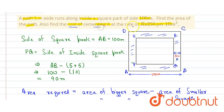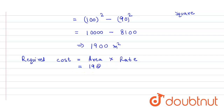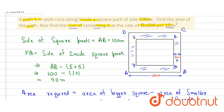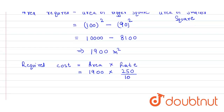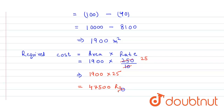In the second part, we have to find the cost of cementing at the rate of 250 per 100 meter square. The required cost equals area into rate. The rate is 250 per 100 meter square, so we divide by 100 to get the rate per meter square, which gives 2.5. So the cost is 1900 into 25, and when we multiply we get 47,500 rupees. That's our answer.